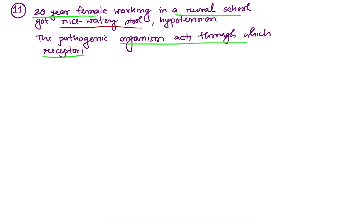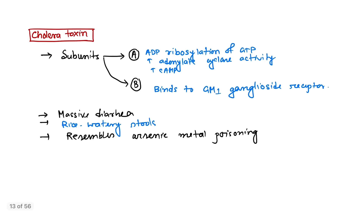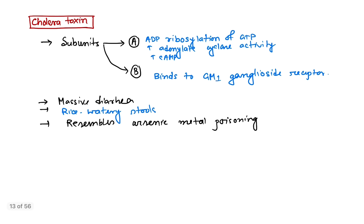This is a typical case with rice water stool, so this is a case of cholera. Cholera acts via cholera toxin. Cholera toxin binds to the GM1 ganglioside receptor, so the answer is GM1 ganglioside. Cholera toxin has two subunits — subunit A and B. Subunit B binds to GM1 ganglioside.